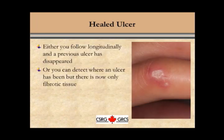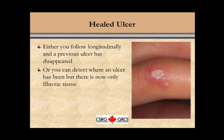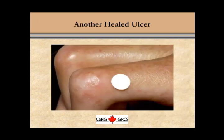Healed ulcers are either areas where you have been following a patient longitudinally and previously saw an ulcer that has now disappeared — that area would be called a healed ulcer — or you can actually detect where an ulcer may have been, such as in this finger here, but now there is really only fibrous or scar tissue, and this would be called a healed ulcer. This is another area where there is a lesion that looks like a typical ulcer, but there is no depth any longer and it is covered by fibrous tissue. This would be a healed ulcer.